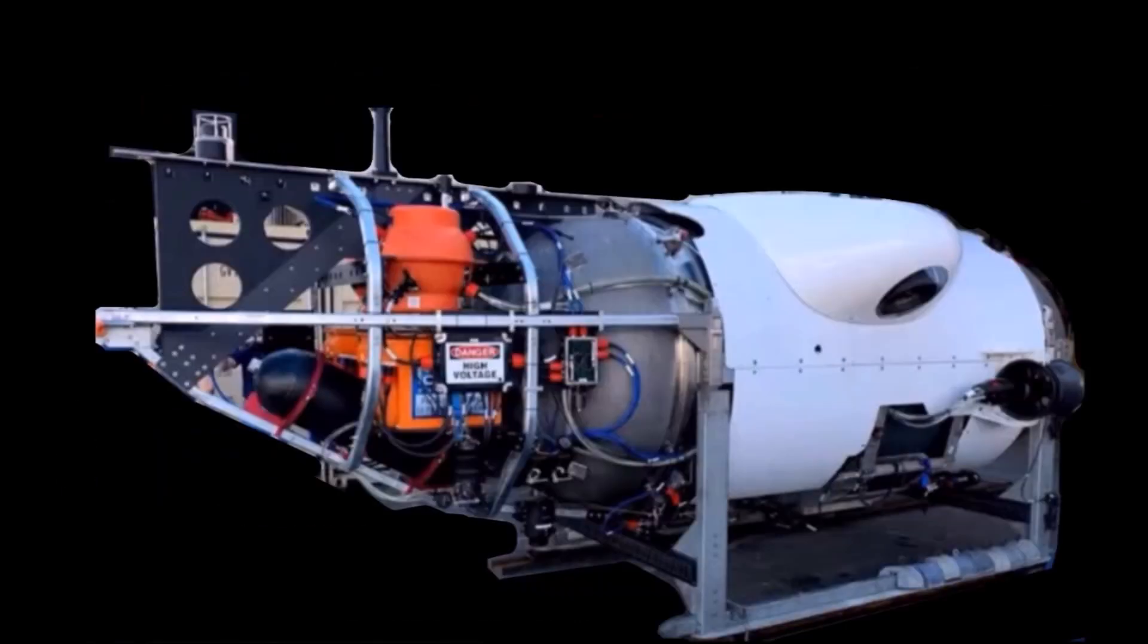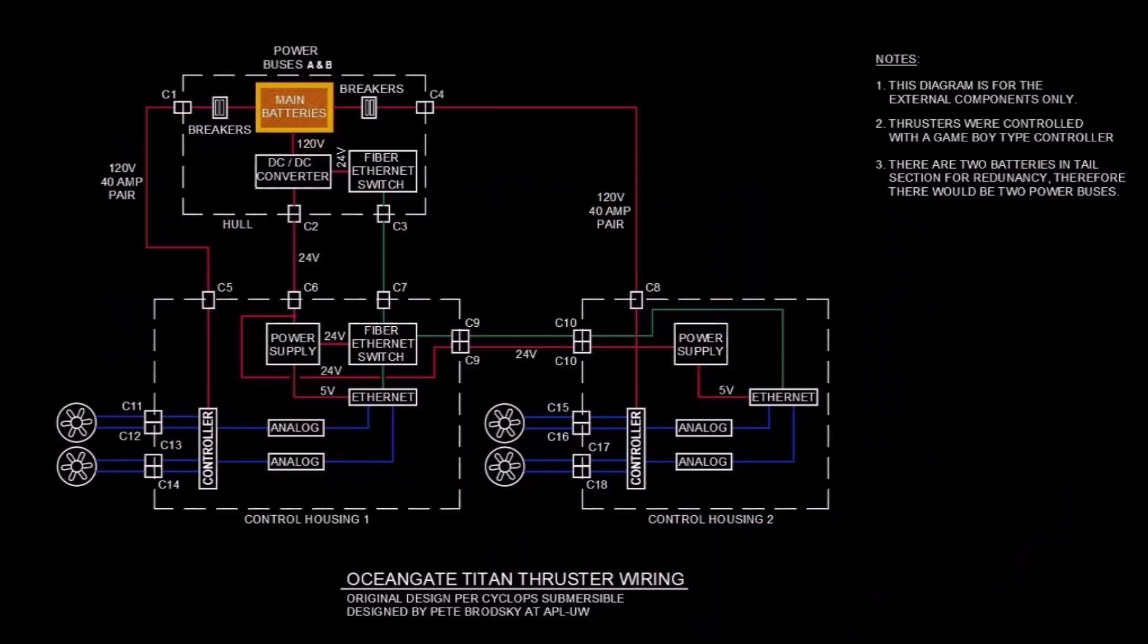It starts out with two big batteries in the tail section, as can be seen here. These were apparently 120 volt DC, and some of that power went to a DC-DC converter, which knocked it down to 24 volts. This, in turn, fed two power supplies in each control housing, which supplied 5 volts to the Ethernet. The Ethernet was the interface to the analog controls of the thrusters.